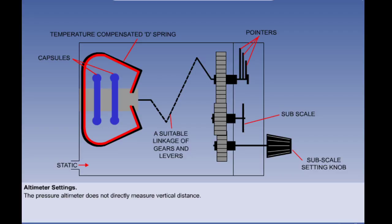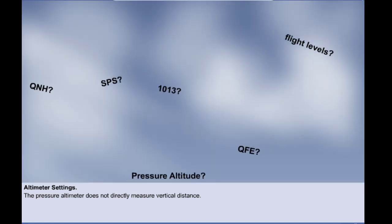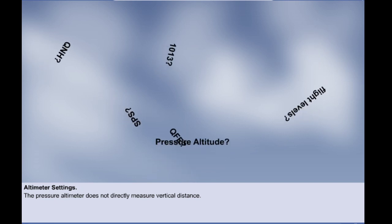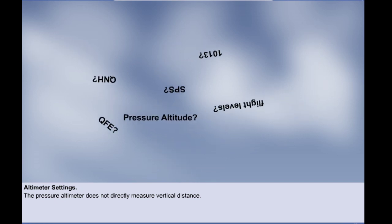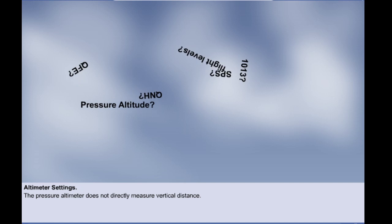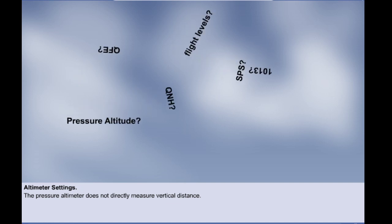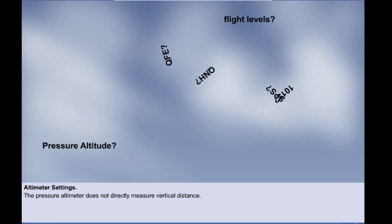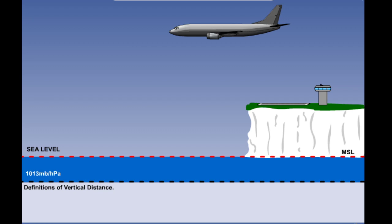In this lesson we are going to remind ourselves of the basic principle behind the pressure altimeter and to appreciate its limitations as a measure of vertical distance. We will also look at altimeter settings and the reasons for using one rather than another. First, let's start with some basic definitions so that we use the correct terminology.